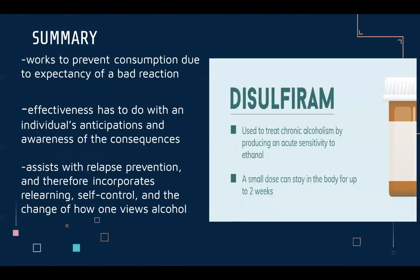A summary of how disulfiram works: when it is taken with alcohol, it causes a really bad reaction — some refer to the symptoms as a very bad hangover feeling. A big part of how disulfiram works, other than causing negative reactions, is that it causes expectancy in the individual experiencing alcoholism — anticipating a very bad reaction, which usually deters people from deciding to drink alcohol. It has proven very successful in prevention, relearning self-control, and abstinence in the long term, and can change how one views alcohol. Due to the emphasis on how it affects the decision to drink psychologically, it can also be considered a pharmacologically assisted psychotherapy.